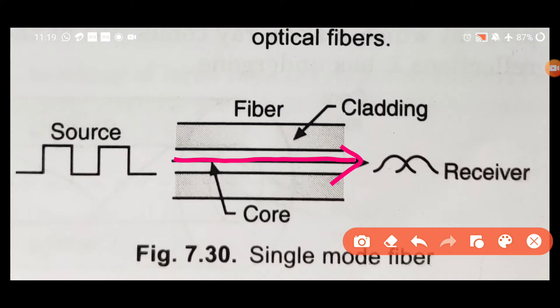Because the critical angle is close to 90 degrees, the signal travels straight. If you look at the core size in single mode, it is very small. You can compare this between step index and graded index.